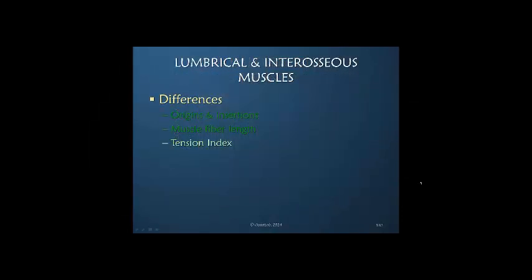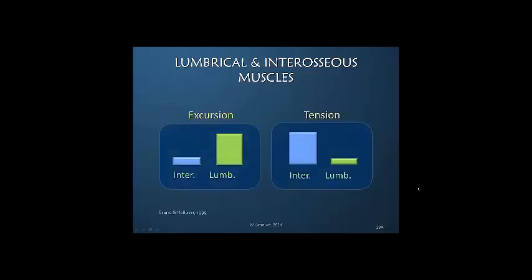What about the tension index? This has to do with strength — the ability to really pull. If we look at excursion versus tension, the lumbrical moves a great deal more than the interosseous muscle. Excursion is much greater for the lumbrical, but this reverses when we ask about tension or strength: the interosseous muscles are much stronger for their size than is the lumbrical.